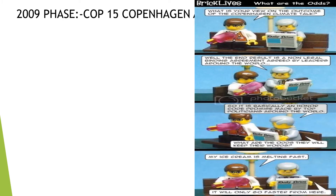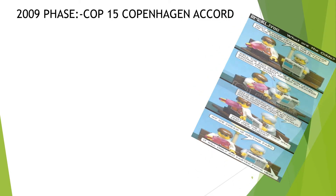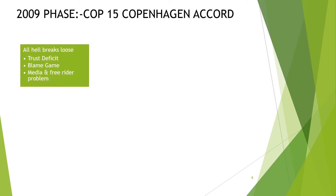The Copenhagen Accord. A cartoon was released during that time whose last line — 'my ice cream is melting first' — was a slight remark on the failure of the Copenhagen Agreement. Why was it a failure? There was a trust deficit between developed and developing countries. Both sides were blaming each other. Media was not playing an impartial role. There was also a free rider problem involving China, India, and Brazil.